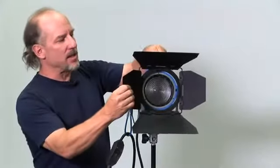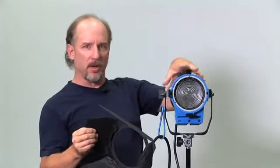The Fresnel Lens is a glass lens in the front of the instrument. It makes a very smooth, even beam field. It's one of the beauties of working with Fresnel Lens Light.